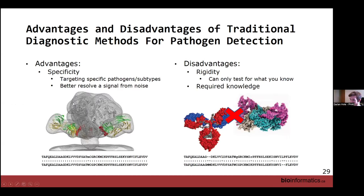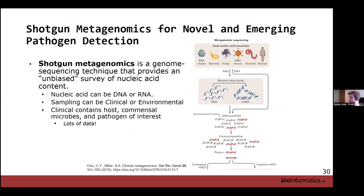Another disadvantage is that traditional methods require a lot of knowledge about your pathogen of interest. For PCR, you need to know the genome sequence to design primers, and you need to know or have an idea of what's causing illness to look for it. Blindly guessing might waste money or time, when it might be much faster to just do shotgun sequencing — which is what we'll focus on next.